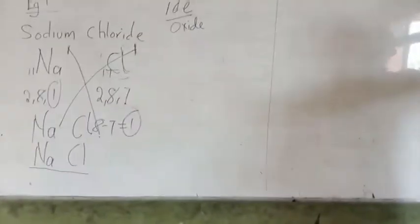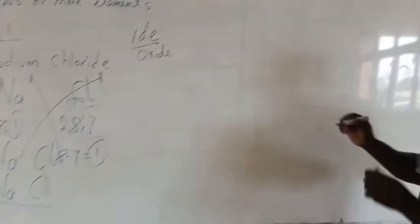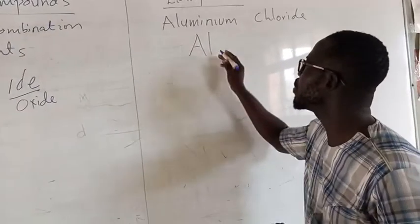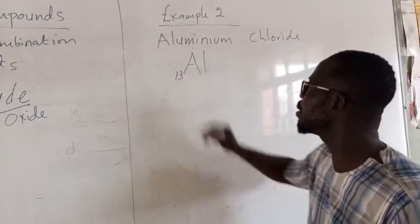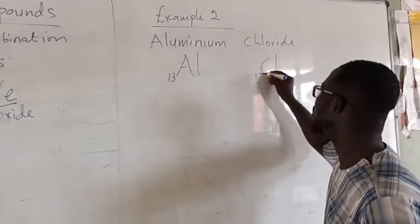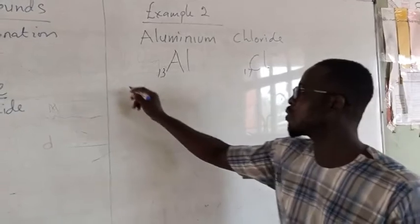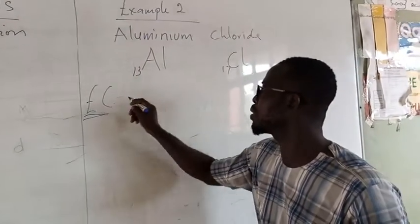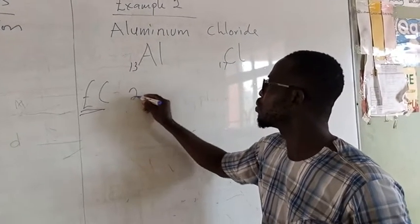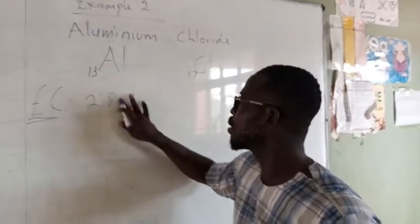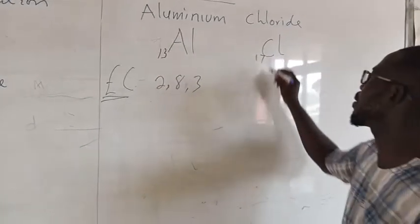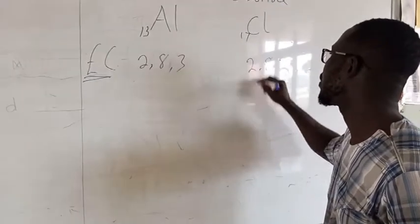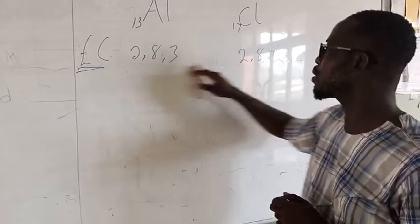So let's look at aluminum chloride as our second example. Aluminum has atomic number of 13. And then chlorine, as we know, atomic number 17. Electron configuration, let me call it EC. So we have 2,8,3, and then we have 2,8,7. This is our electron configuration.